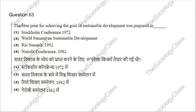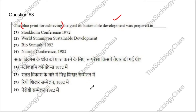Question 63: The blueprint for achieving the goal of sustainable development was prepared in what? Options: Stockholm Conference, World Summit on Sustainable Development, Rio Summit, or Nairobi Conference. Remember this question — the correct answer is option 3, the Rio Summit of 1992.